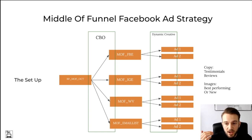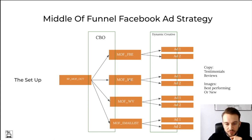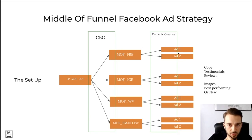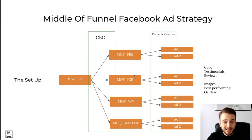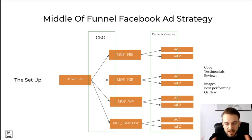For copy, I always go with testimonials or reviews, or the best-performing copy from your top-of-funnel and bottom-of-funnel campaigns — split test those two in a dynamic creative to see which performs best. The Facebook and Instagram engagement ad sets use the same ads at the ad level, so just duplicate the Facebook engagement ad set, remove Facebook engagement from the audience, and add Instagram engagement instead — nothing else changes. Lately I've been running a CBO with dynamic creative within one campaign, letting Facebook decide the best-performing ad set and image.